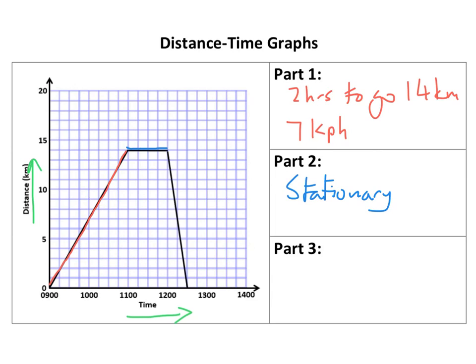The last part, which is this, basically that is a lot steeper. So in that time you've gone 14 kilometers in half an hour, or 30 minutes. Now that is speed equals distance over time, so 14 divided by half would be 28 kilometers per hour.